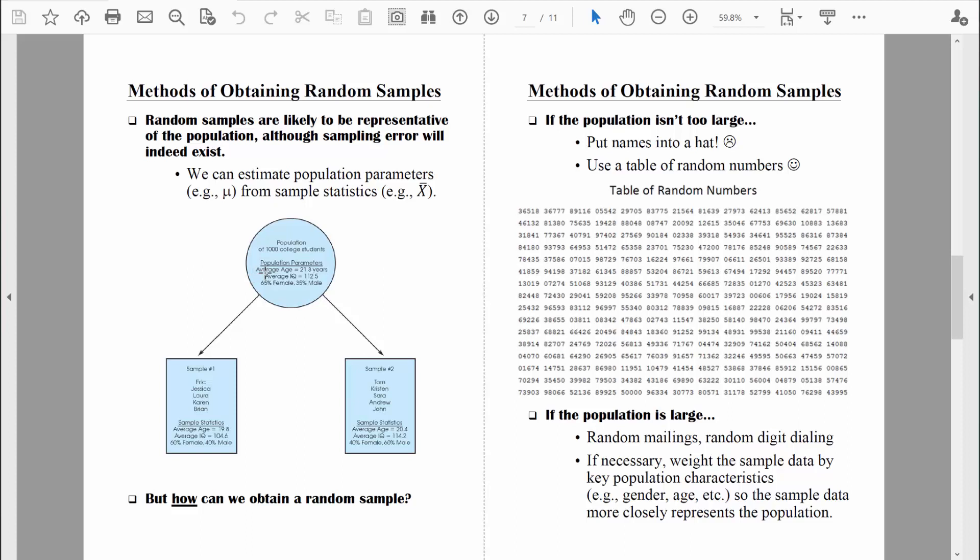So like the average age of all those students would equal 21.3 years old. That is the correct answer for the entire population. That is a population parameter, but we know that some populations are simply too large to measure.